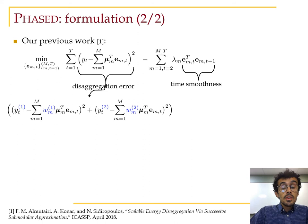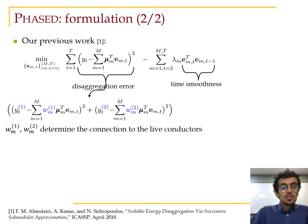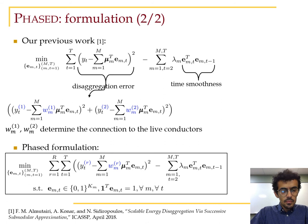In cases where the appliance is connected between the two active lines, as in heavy loads, then W^1 and W^2 will be between 0 and 1 and sum up to 1. We learn these connectivity weights from training data. So this results in the final formulation in our method PHASED, where the first summation corresponds to the summation over the active conductors, where R is equal to 2 or 3, depending on the power system.